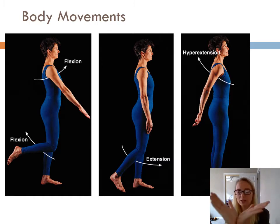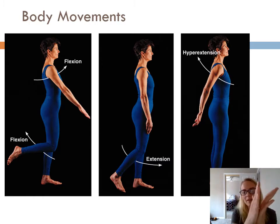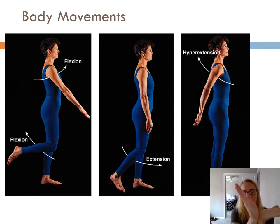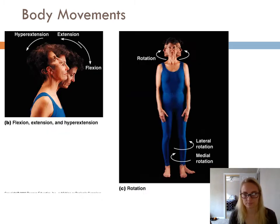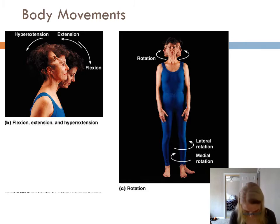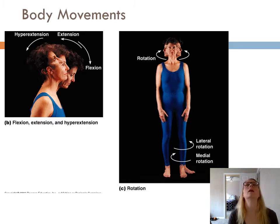So flexion is narrowing the angle, extension is increasing the angle. We can see that in the head as well — we can do flexion, extension, hyperextension.